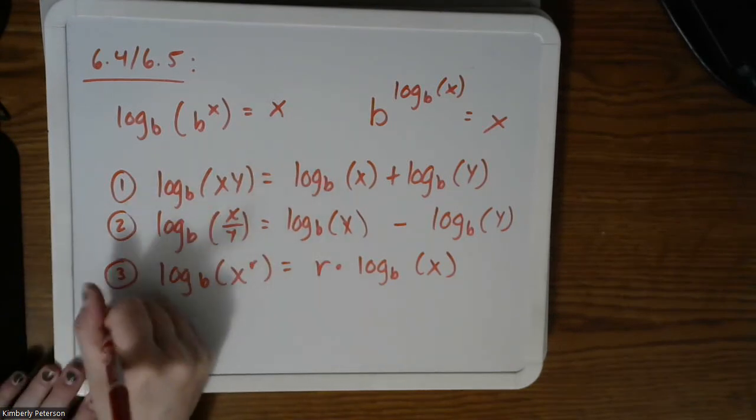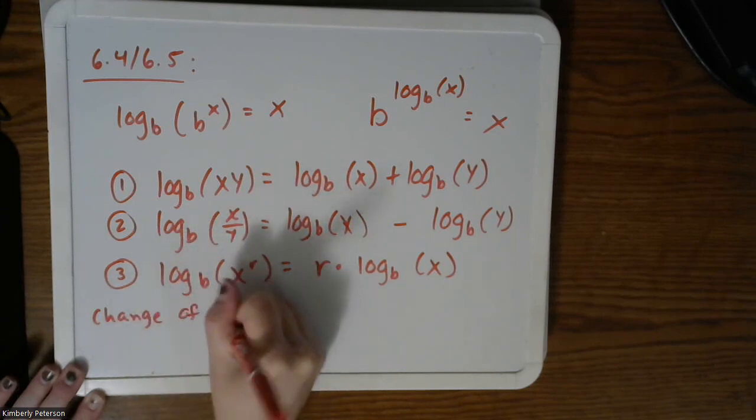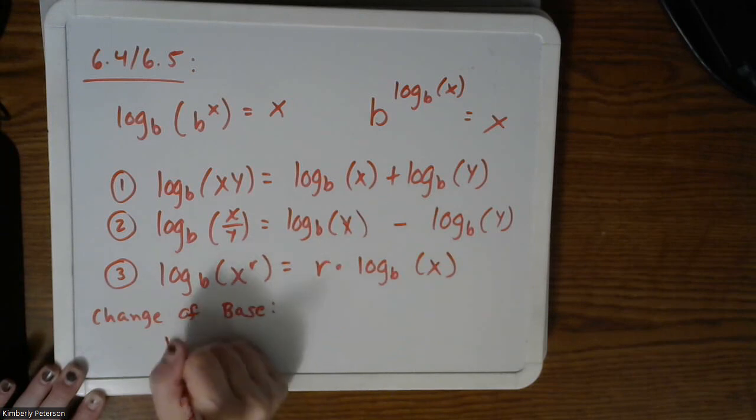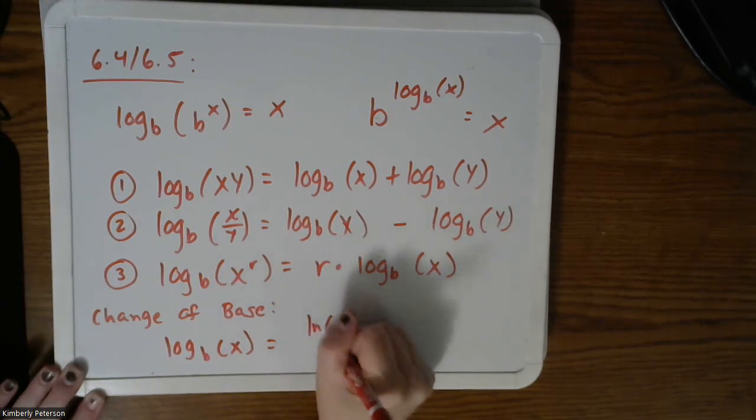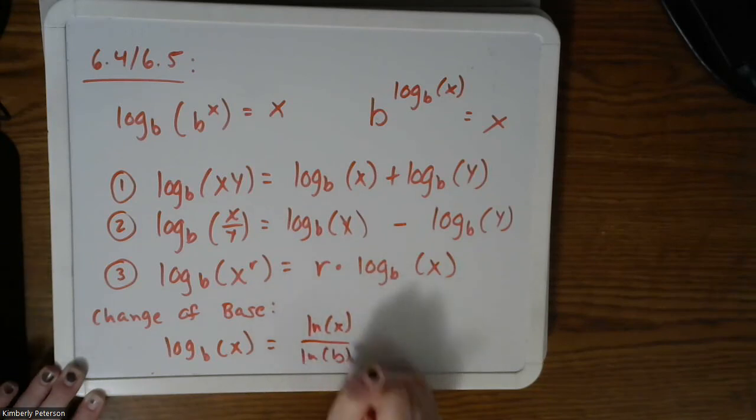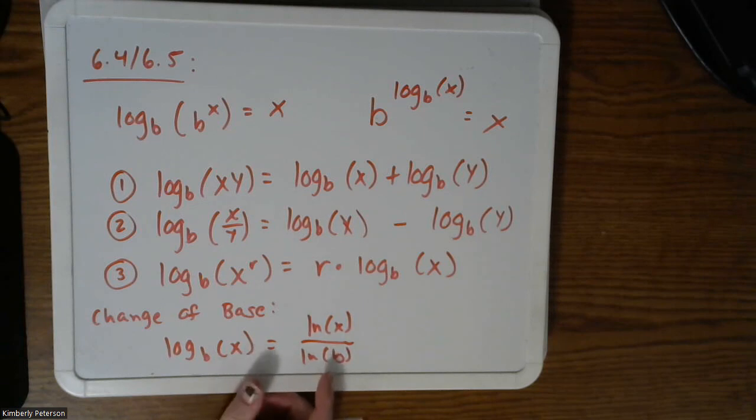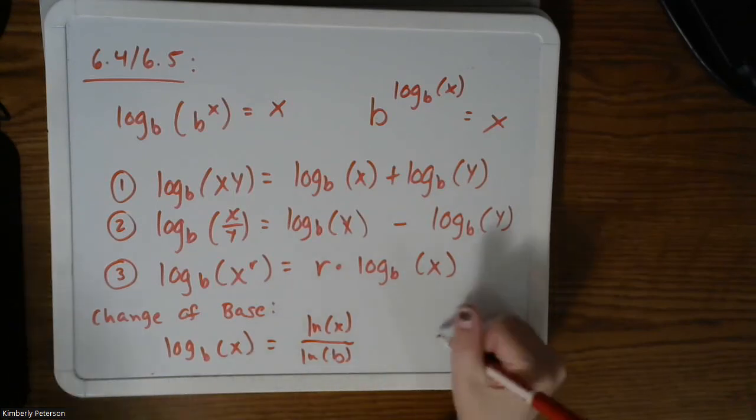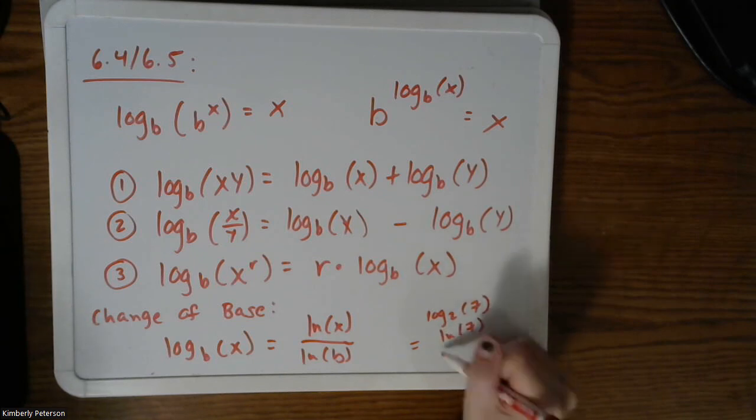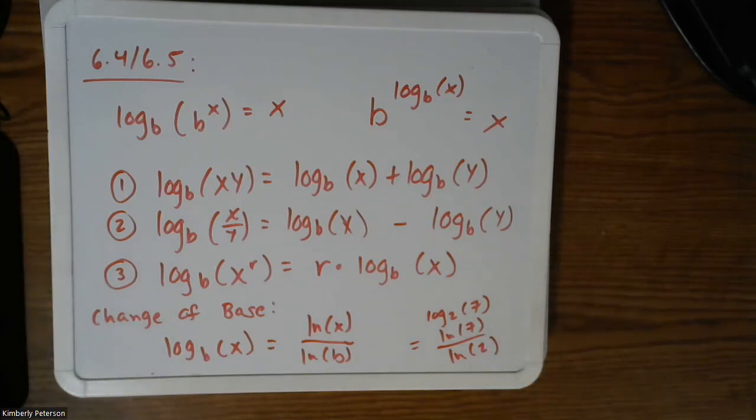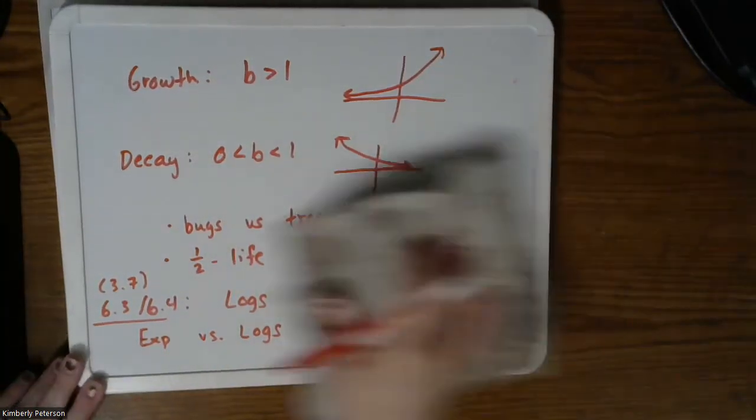We also have the change of base. So this told us if you have any log base B of X and you need to convert it, say, to put in your calculator, you do LN of X over LN of B. So now, nowadays, this isn't probably as important because you have technology. But back in my day, most of our calculators couldn't take any base. Like if you had log base 2 of 7, you couldn't put that in your calculator. What you had to do was LN of 7 over LN of 2, as an example.